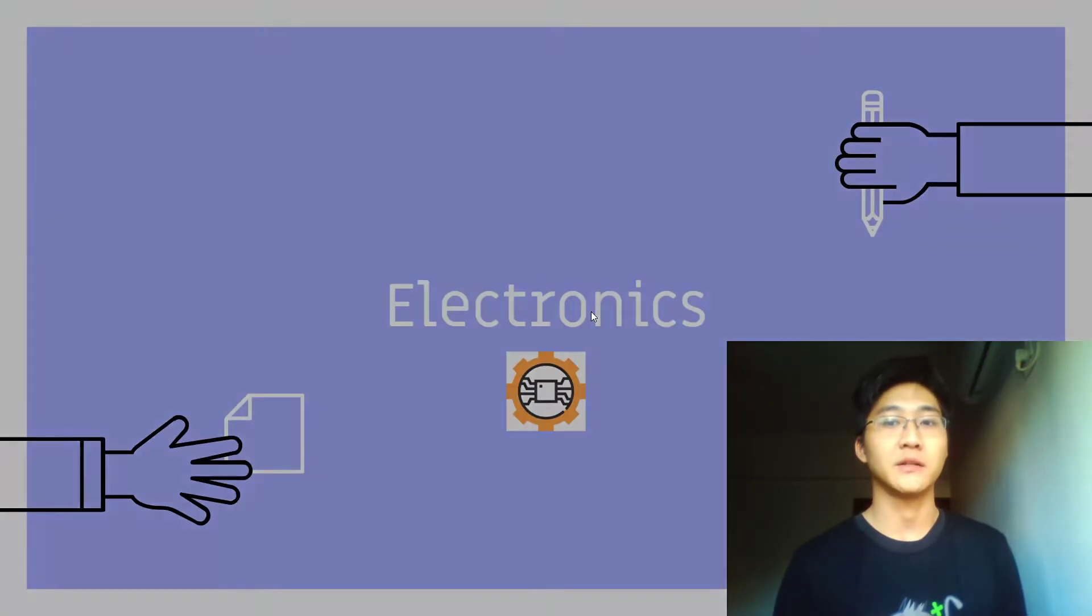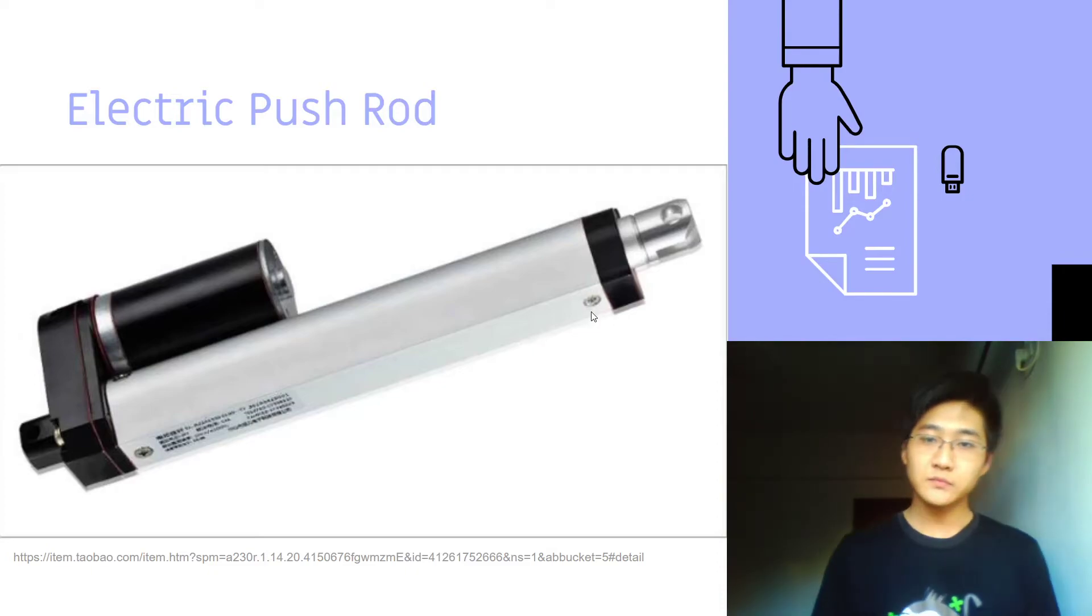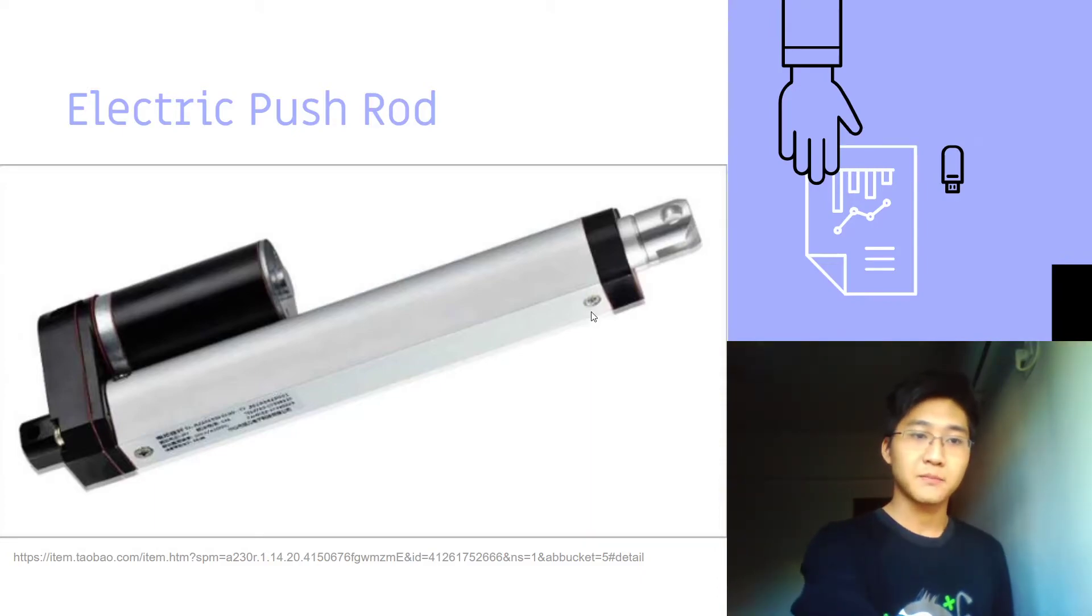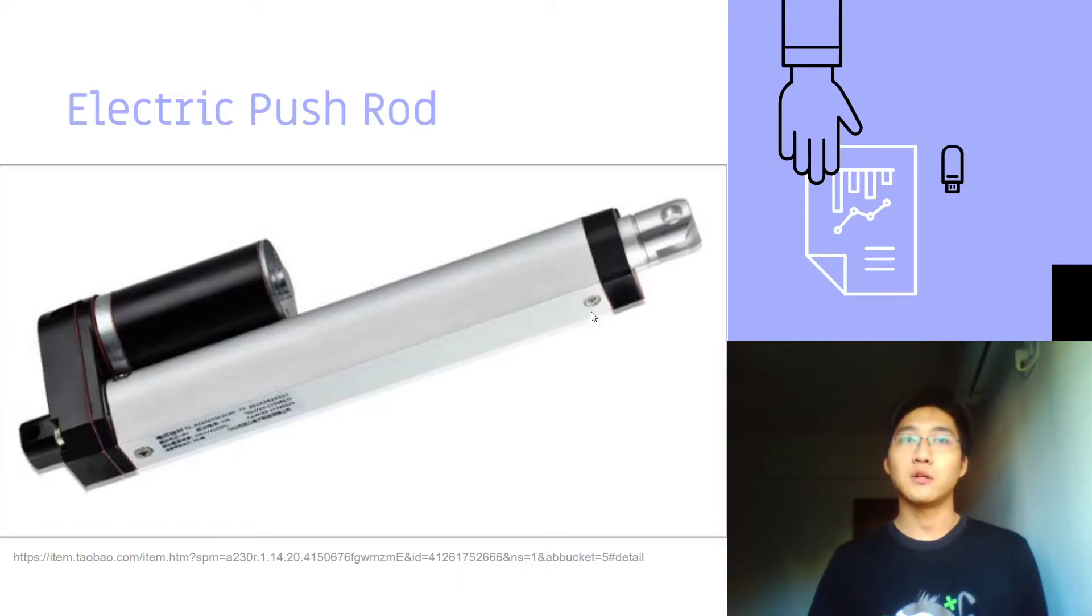And then we have the electronics. For electronics, the first thing is the push rod. This is the push rod in the cutaway. So there's a motor right here, and this part is the transmission. And then there's a worm gear and worm. With the worm gear and worm, the motor can create a huge force that can withstand up to 100 or 150 kilograms.